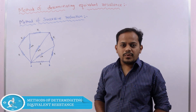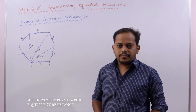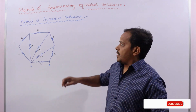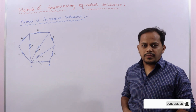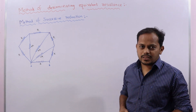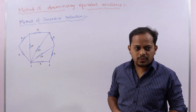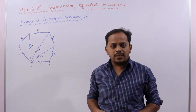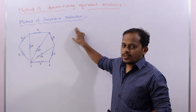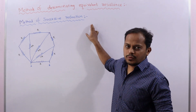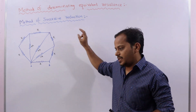Hello viewers, today we are going to discuss the methods of determining equivalent resistance of some difficult circuits. We have various methods to determine equivalent resistance. The first method is the method of successive reduction.